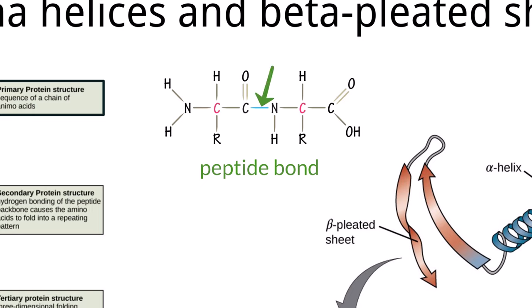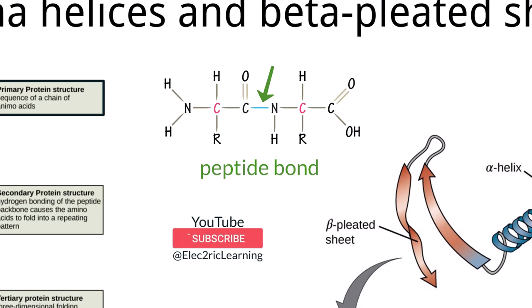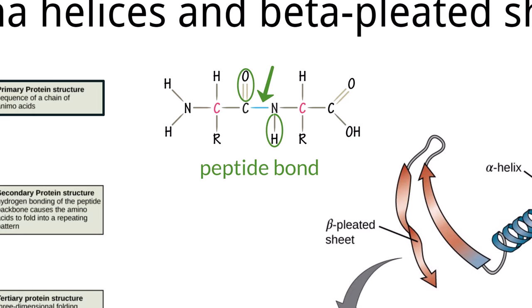This leaves a bond between the carbon and nitrogen. But there are still other structures branching off of the carbon and nitrogen within that peptide bond, which is a double bond to an oxygen from the carbon and a single bond to a hydrogen from the nitrogen.